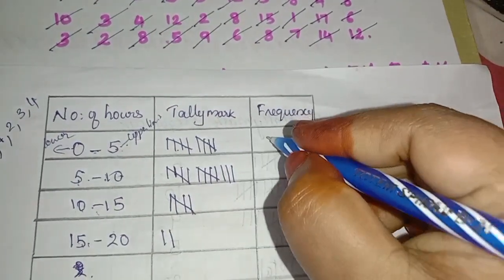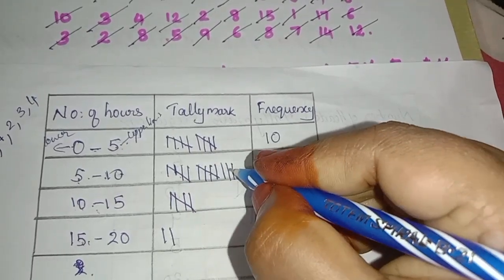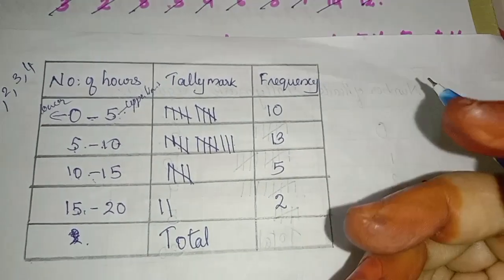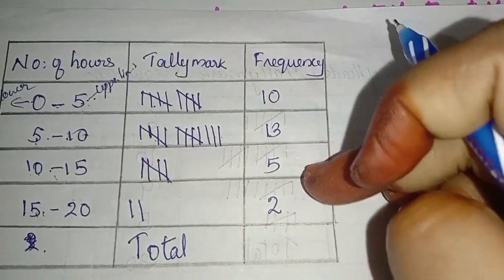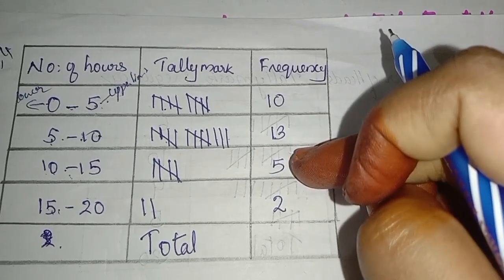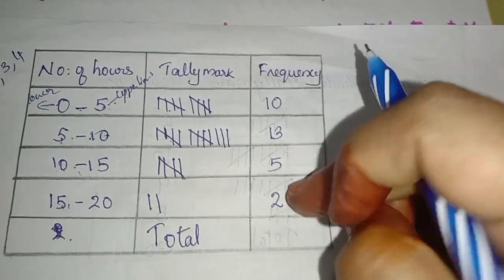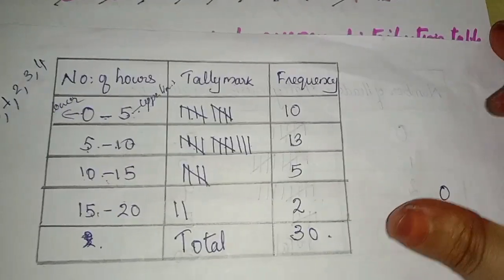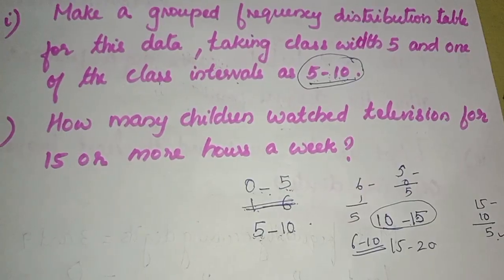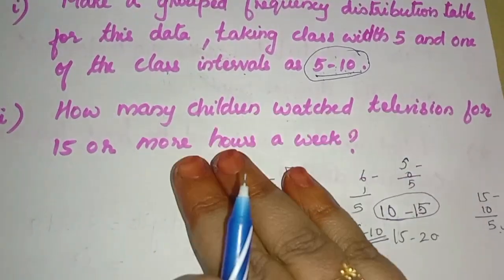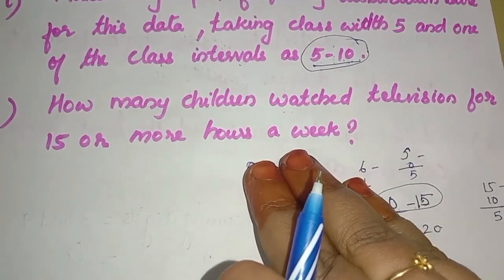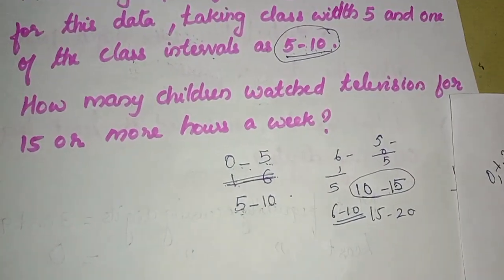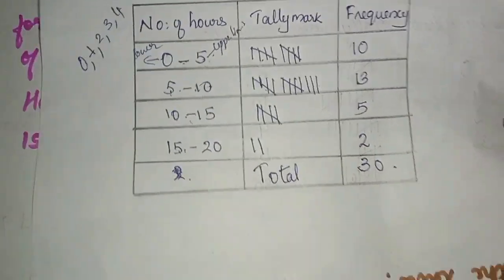Total here is 10, then 5, 10, 11, 12, 13 — total 2, 3, 5, 2, 3, 2. So if we have 30 students we will have a total of 30. 10 plus 5 is 15, then 28, 29, 30 — total 30. Now we have a question: how many children watched television for 15 or more hours a week?